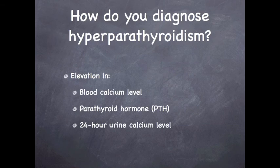Hyperparathyroidism is diagnosed when your blood calcium level and parathyroid hormone values are elevated. 24-hour urine calcium levels may be either normal or elevated. Typically, an elevation in blood calcium level is one of the first clinical signs of primary hyperparathyroidism.